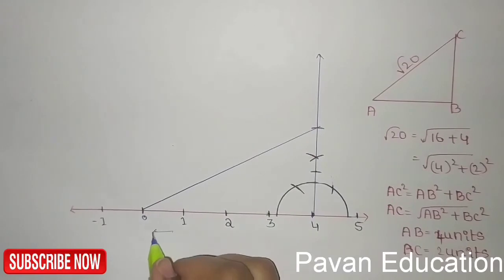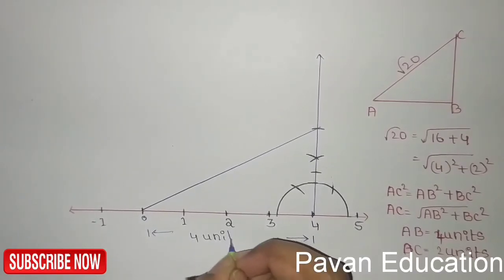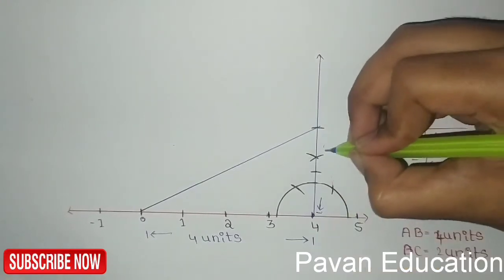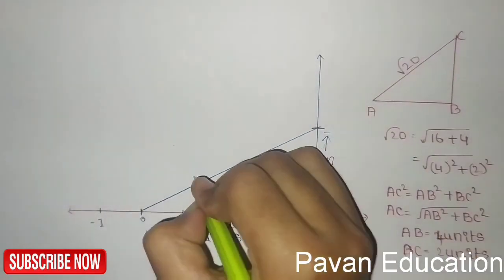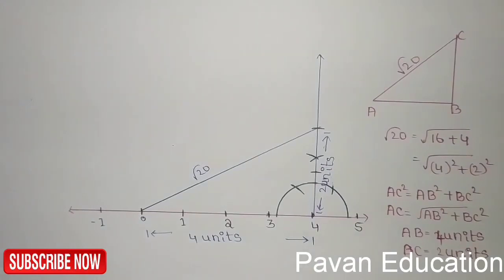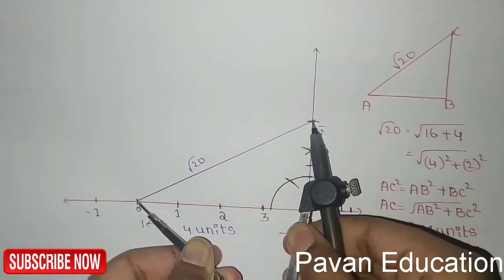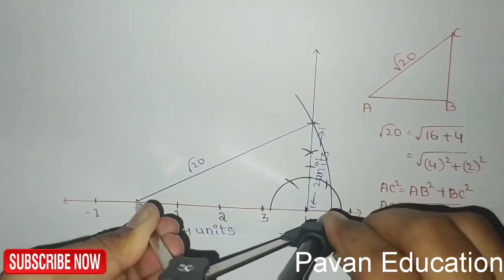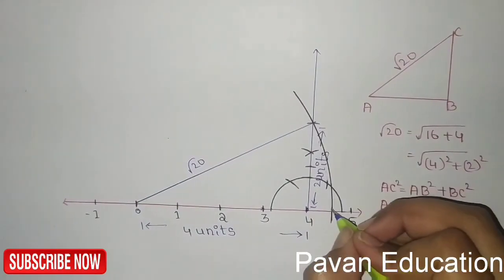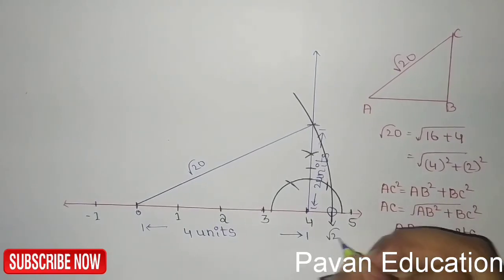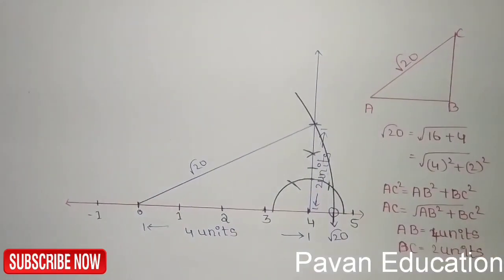We know that AB is 4 units, BC is 2 units, and AC is nothing but root 20. Now take a compass with the radius equal to the length of AC, which is root 20. Draw an arc — where it cuts the number line is the point root 20. Like this we can represent root 20 on the number line.